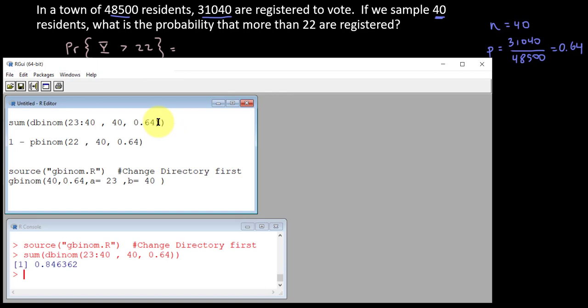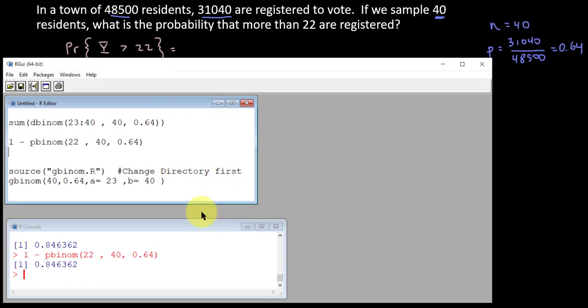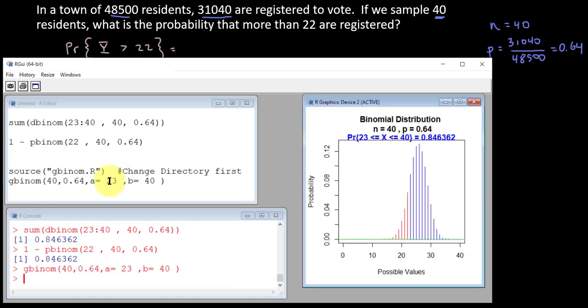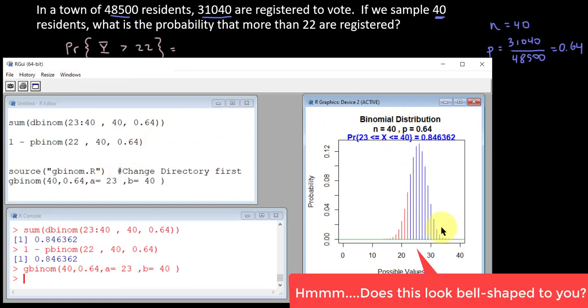Approximately 0.8463. The two dbinom and pbinom gave me the same solution. Let's make sure gbinom corresponds. Indeed it does. And I love this graphical visual as well. So we know the solution to this question. We have the tools to answer it. I'm going to write it down and expand upon it.